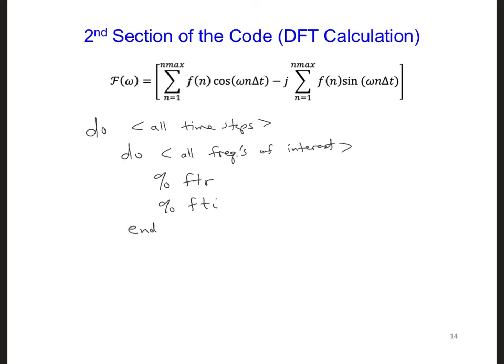And then we need to also end the time stepping loop. Notice that for the summation of the imaginary part, we can ignore the j. We already know it's an imaginary number when we are saving it in the FTI. So multiplying by j is not needed, and we're going to square the result anyway when we calculate the magnitude.